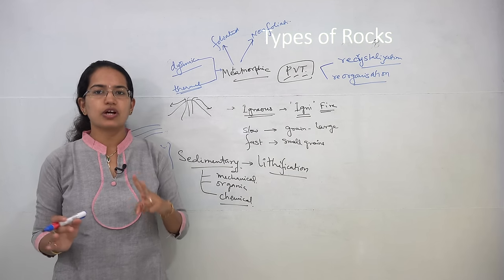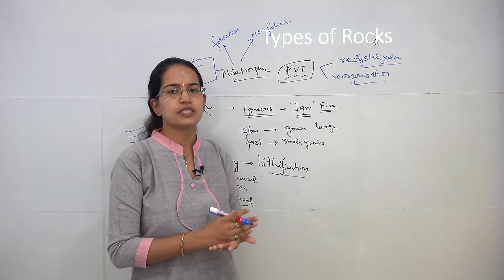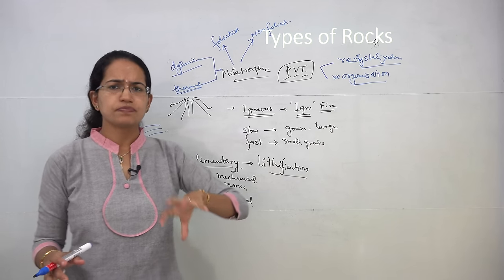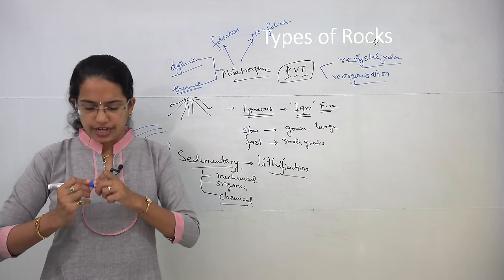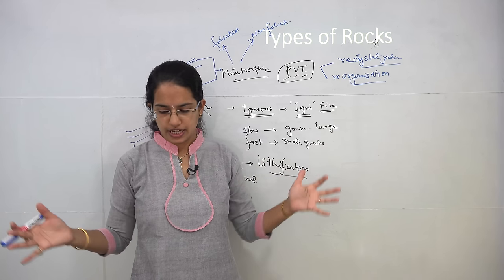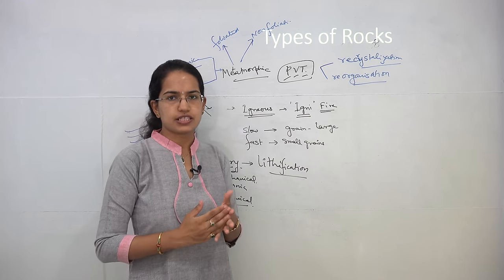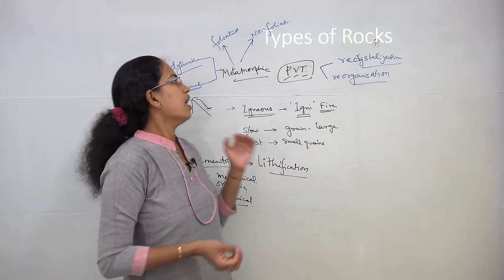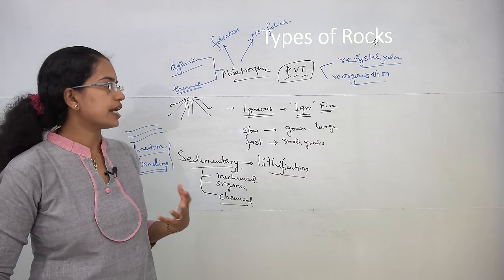Metamorphic rock can further be classified into contact metamorphism and regional metamorphism. Contact metamorphism occurs when magma intrudes and there is high temperature — new material is added under this process. Regional metamorphism involves subduction or recrystallization occurring with high temperature and pressure, commonly associated with tectonic shearing activity. Common examples of metamorphic rocks are gneiss, schist, slate, and others.